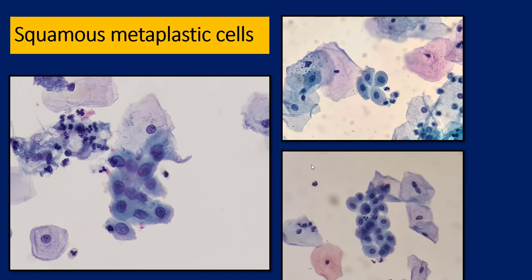The next group are squamous metaplastic cells. These have angulated ends and are present in aggregates of various sizes, or sometimes singly. The nucleocytoplasmic ratio should be less than 50%; once it exceeds 50%, we start thinking in terms of squamous intraepithelial lesions and atypical squamous cells. Metaplastic cells can sometimes show spider-like processes, with a little bit of hyperchromasia and irregularity, which can be acceptable.